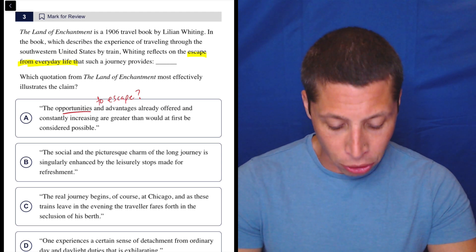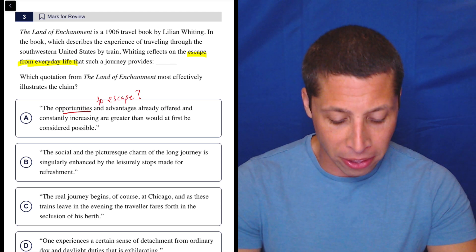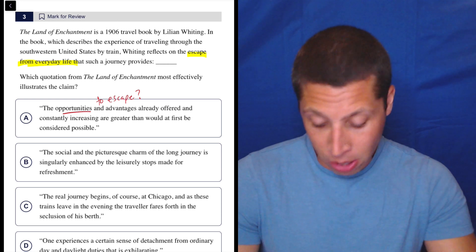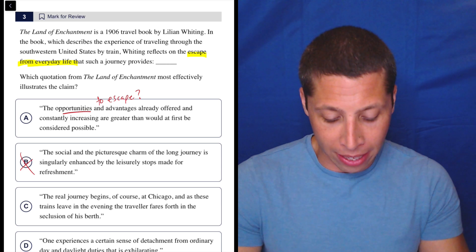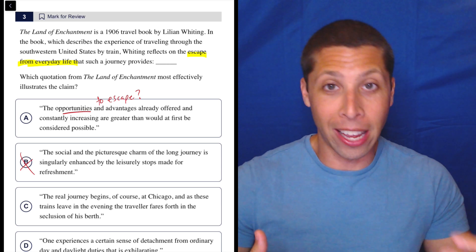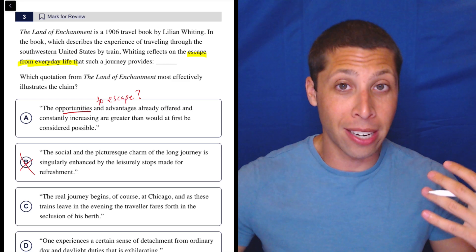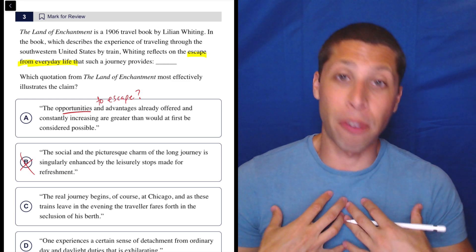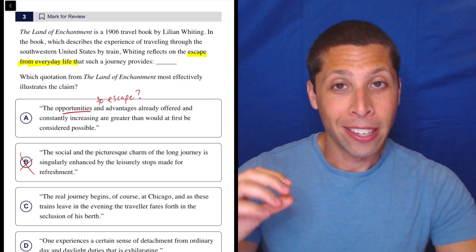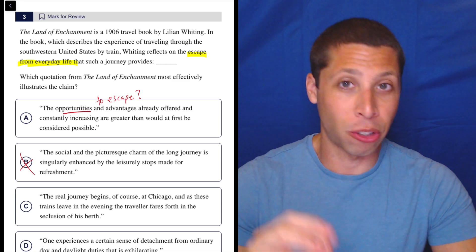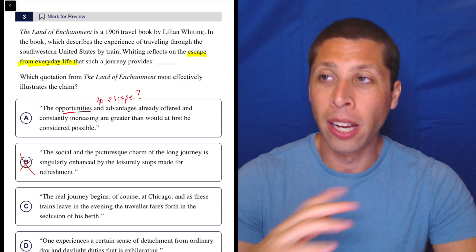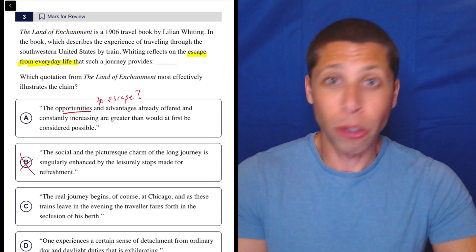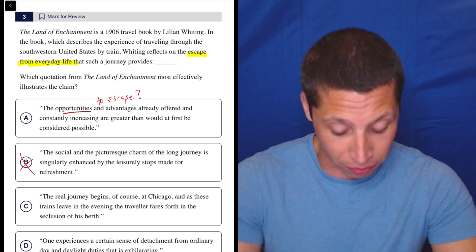Let's look at B. The social and the picturesque charm of the long journey is singularly enhanced by the leisurely stops made for refreshment. This is just talking about why the train is nice. So no, that doesn't say anything about escaping anything. Maybe again, we can say that if you're enjoying the leisure of the train, then you've escaped from your everyday troubles. But I really love the lines to say that, not for me to have to interpret the lines. This is why literature and poetry questions where you think, I don't know, I've never read the book, these are harder. You don't need the background. You shouldn't have to know anything beyond what's written explicitly on the page. So don't do a lot of interpreting. I don't see what we need there. So this is definitely wrong to me.